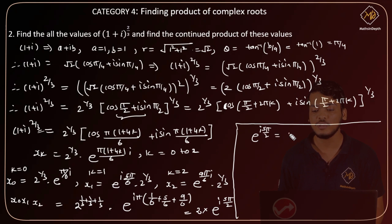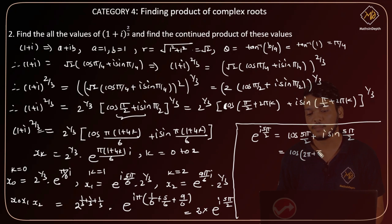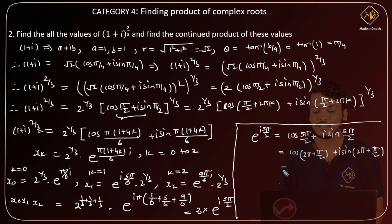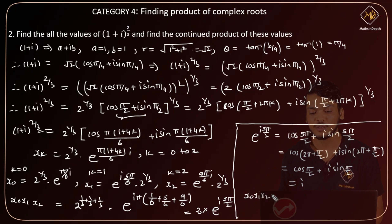Now e^(i·5π/2) equals cos(5π/2) + i·sin(5π/2). Since 5π/2 = 2π + π/2, we have cos(2π + π/2) = cos(π/2) = 0 and sin(2π + π/2) = sin(π/2) = 1. So e^(i·5π/2) = i, and the final answer for the continued product is x₀·x₁·x₂ = 2i.